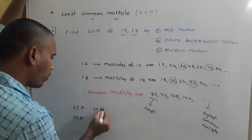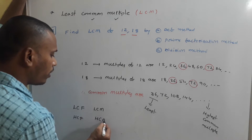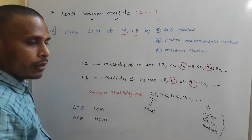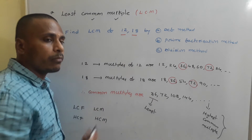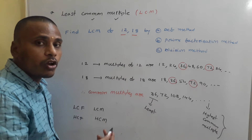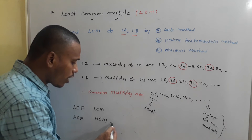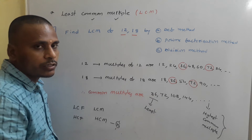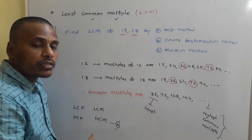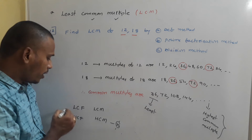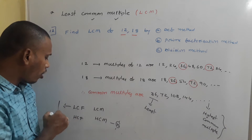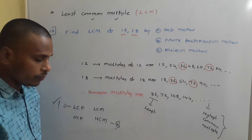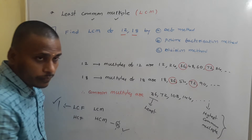The highest common multiple is always not defined because for any pair or group of numbers, multiples go on infinitely. So the highest common multiple always does not exist. In the same way, for any group of numbers, the lowest common factor is always 1, since it is always fixed as 1.